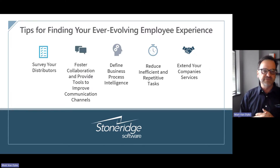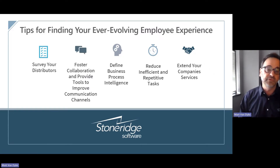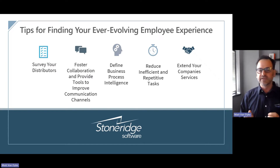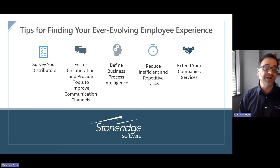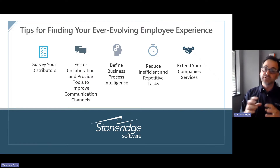First, survey your distributors and resellers — what are their pain points, what can you provide them so they work better? Second, foster collaboration and provide tools to improve communications; better communication and better collaboration provide better results. Third, define your business process intelligence. If there is a process and framework, and your distributors can leverage that, they're going to perform better and use that intelligence to improve within the process.